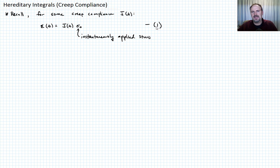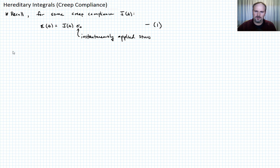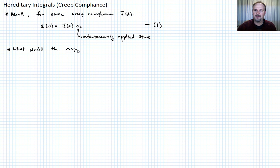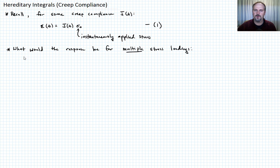What we want to begin by asking is: what would the response be to multiple stress loading? J of t describes the response to a single instantaneous stress sigma naught applied at time t equals zero. What would it look like for multiple stress loadings? Let's draw a picture of what that might look like.